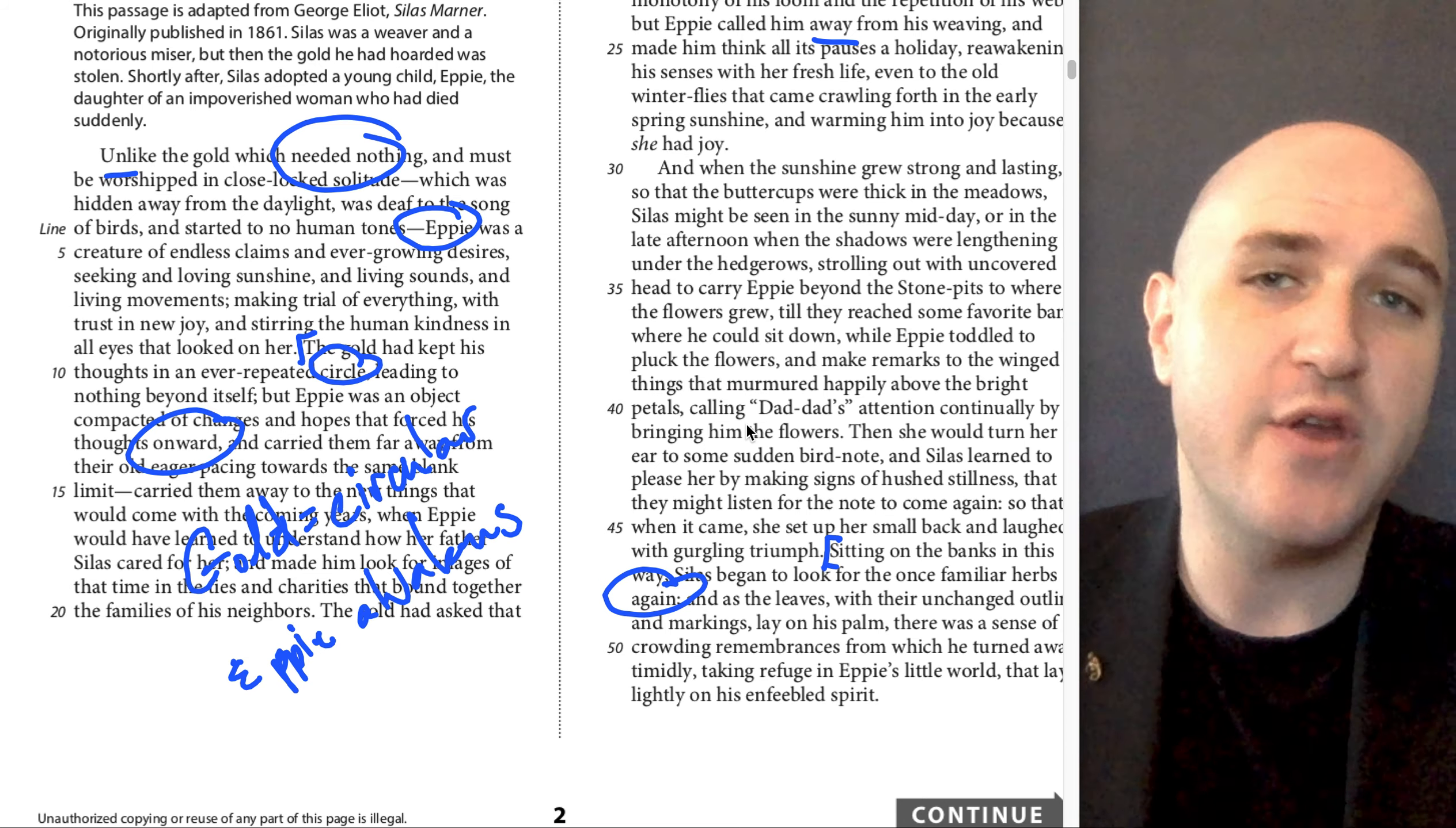So we're looking for something that looks kind of like that. So A, it presents the particular moment at which Silas realized that Epi was changing him. B highlights Silas's love for Epi by depicting the sacrifices that he makes for her. C illustrates the effect that Epi has on Silas by describing the interaction between them, or D, it reveals a significant alteration in the relationship between Silas and Epi.